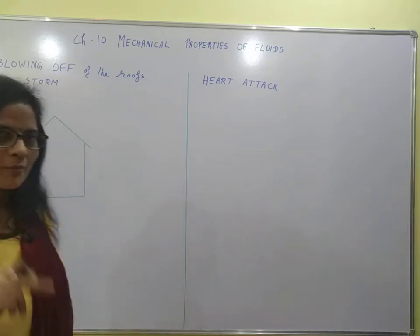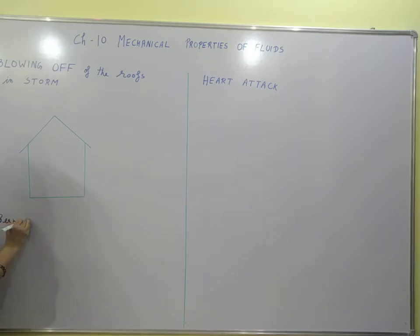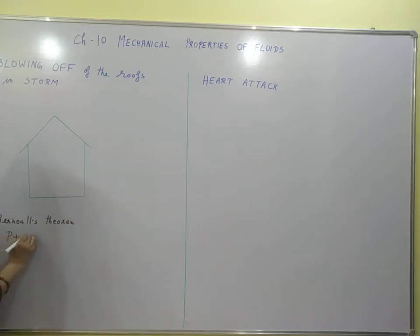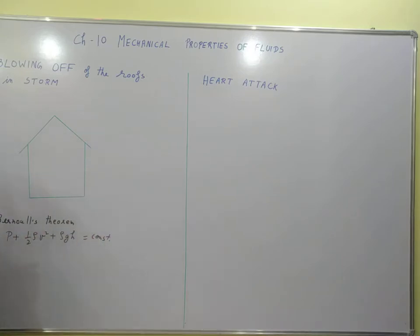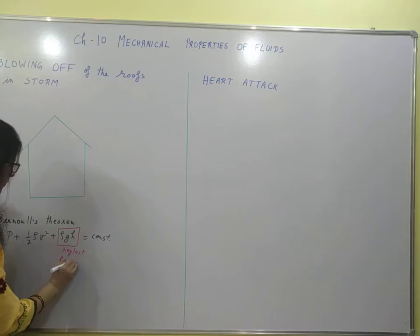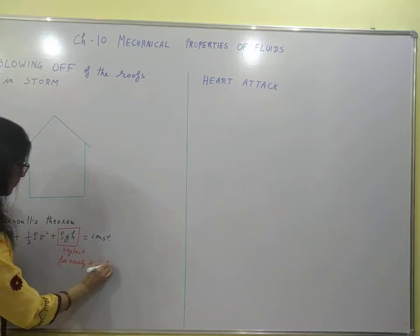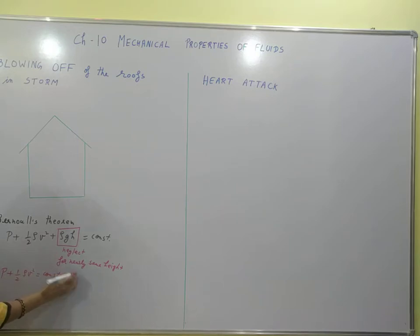This is an application of Bernoulli's theorem. By Bernoulli's theorem, the sum of pressure energy per unit volume, kinetic energy per unit volume, and potential energy per unit volume is constant for an ideal fluid. If we consider the height to be nearly constant, we can neglect that term, so our expression becomes: P plus half rho v squared equals constant.